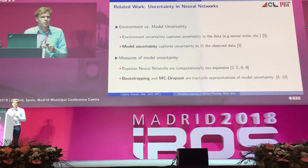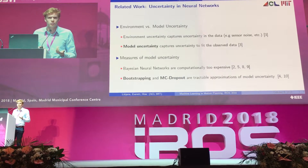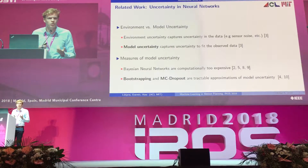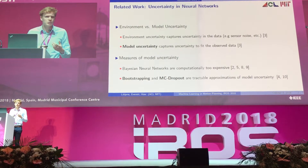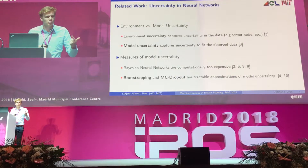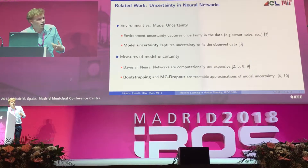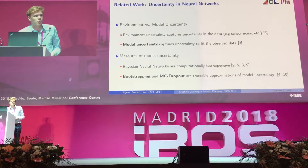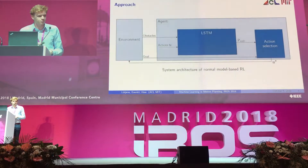To measure model uncertainty, traditionally you would use Bayesian neural networks, which are computationally very expensive. Instead, we use MC Dropout and bootstrapping, which are tractable approximations of model uncertainty.